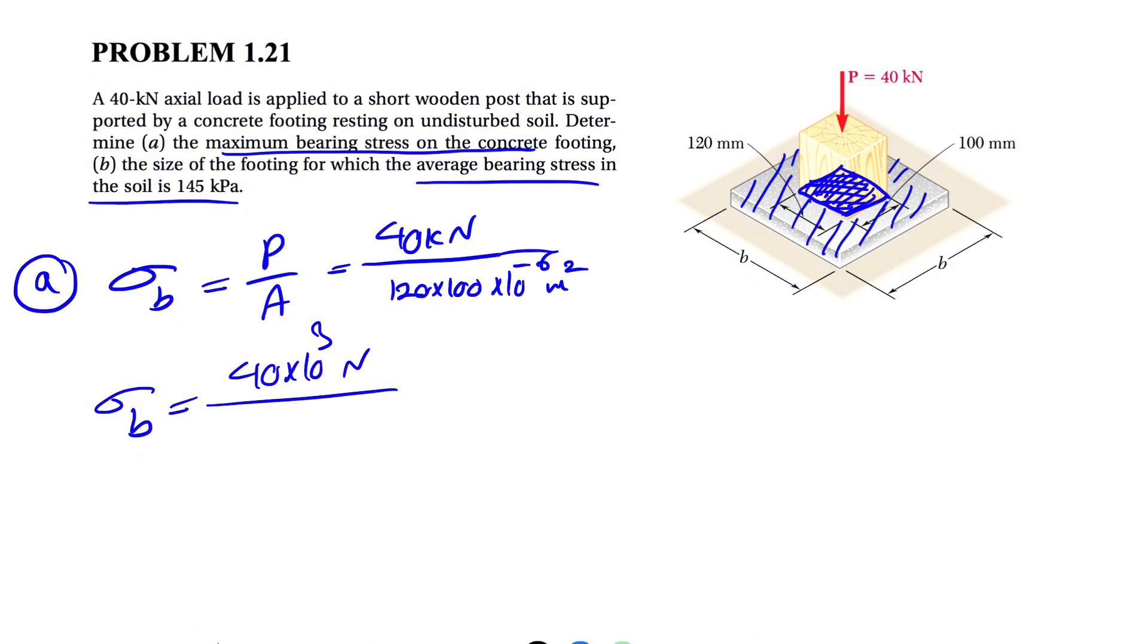In the denominator, we can cancel out the zeros with the 10 to the minus 3. So this can be written as 12 times 10 to the minus 3 meters squared. Now, we can write this as 40 divided by 12 times 10 to the 6.